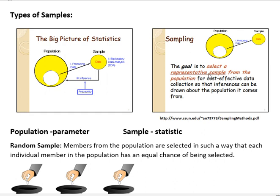So the goal is to select a representative sample from the population for cost-effective data collection so that inferences can be drawn about the population it comes from. So again, we take a small part of the population, and we call that our sample. And that's the data we use to make decisions about the larger population.